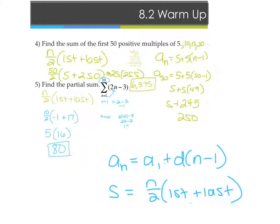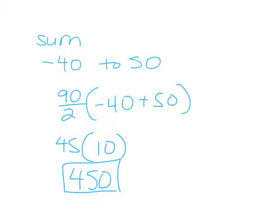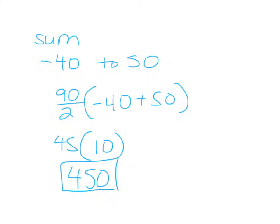Questions on the homework for 8.2? Will? Can you tell me what it says? Negative 40 to 50? Okay. So how many terms are there, right? From negative 40 to 50, there'd be 90. Right? That's your n. The first one's negative 40. The last one's 50. So then I'd get 45 times 10, which is 450.